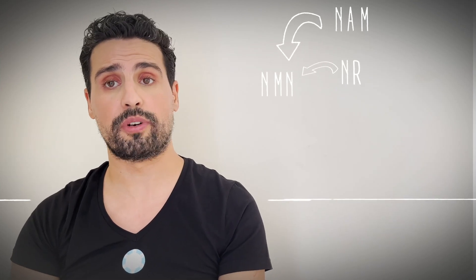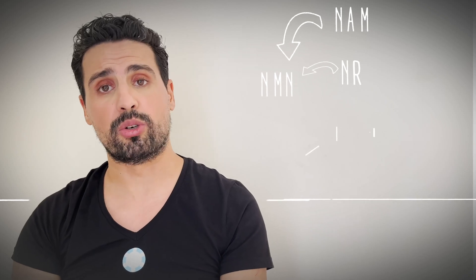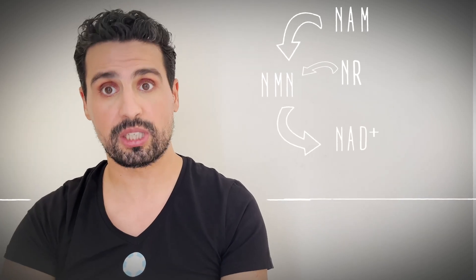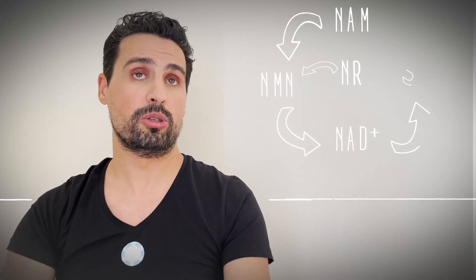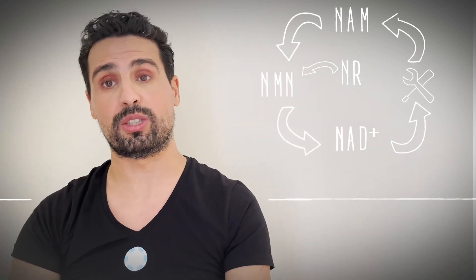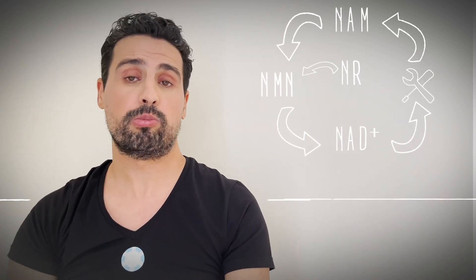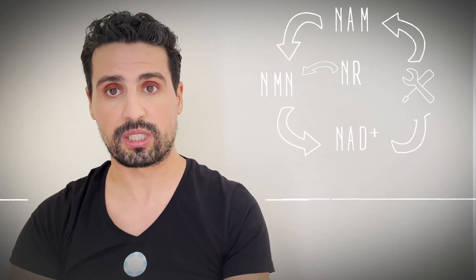First of all, let's start with the molecule NAM and NR, which both are precursors of NMN. NMN is on its turn a precursor of NAD+, and it's the NAD+ that is used as a kind of battery to kick-start a lot of molecular processes in the cell.